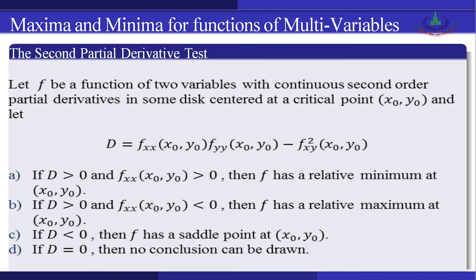Let D = f_xx · f_yy − (f_xy)², where f_xx is the second-order partial derivative with respect to x, f_yy is the second-order partial derivative with respect to y, and f_xy is the mixed partial derivative. We then have the following four cases for the second partial derivative test.